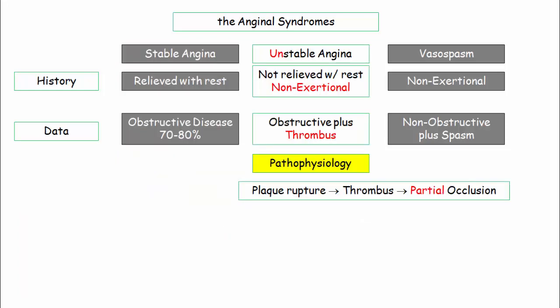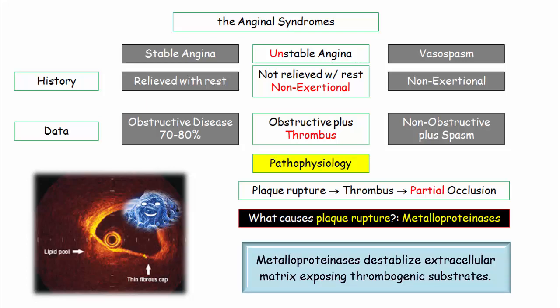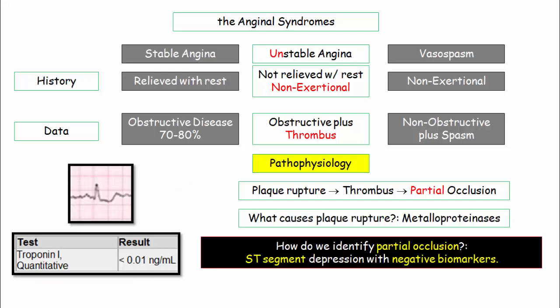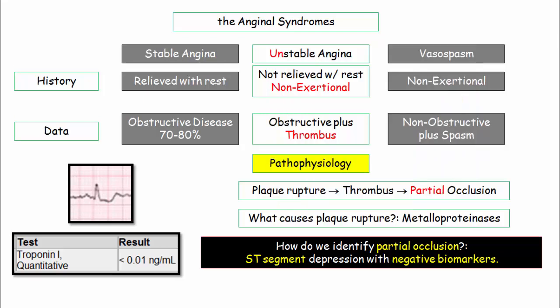The key pathophysiology of unstable angina is the rupture of the vulnerable plaque with development of a partially occluding thrombus. One key mediator of plaque rupture is macrophage-derived metalloproteinases — these enzymes destabilize the extracellular matrix. With plaque rupture comes release of thrombogenic substances that precipitate localized clot development. We know the thrombus is only partially occlusive when the vignette reports ST-segment depression but normal biomarkers: the ST segment identifies hypoperfusion, but the normal biomarker excludes cellular injury.